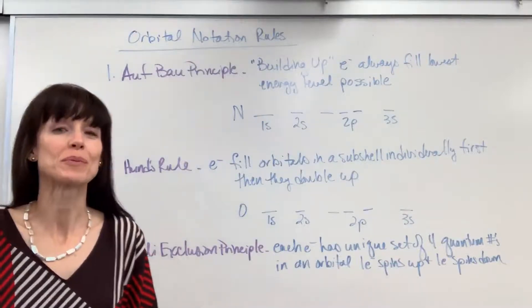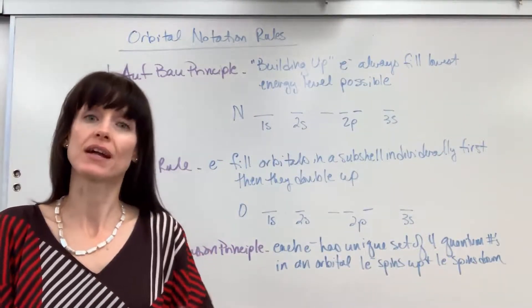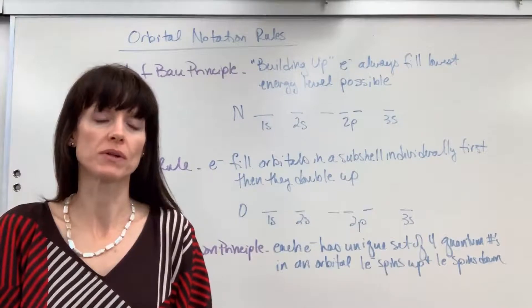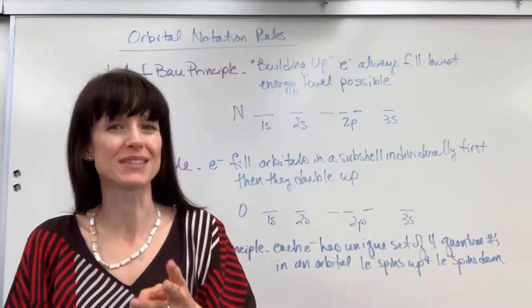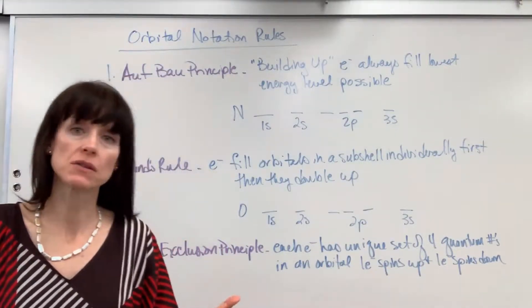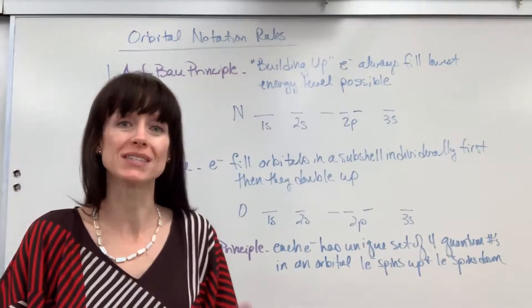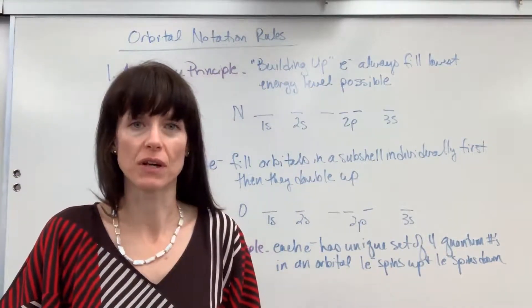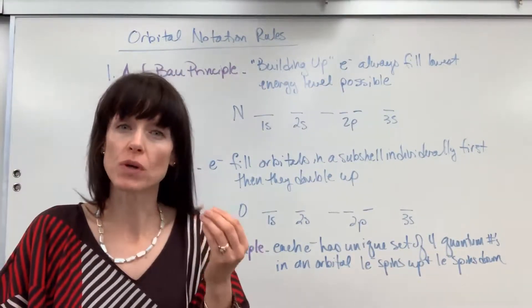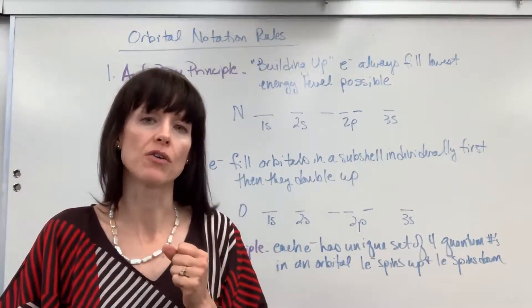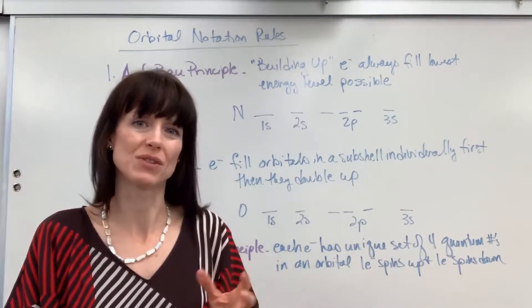Let's talk about orbital notation. Before we can do some examples, I need to give you three rules to write orbital notation. Orbital notation is an extension of electron configuration — it's a more visual, pictorial picture of where the electrons are placed relative to the nucleus.